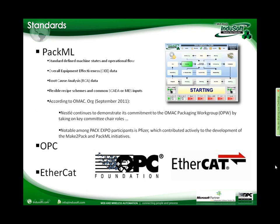According to OMAC, large companies like Nestle are adopting PackML standards, so we are seeing more customers requiring HMI support for this standard. OPC remains a strong standard in the industry, as does EtherCAT — a network for real-time control with extremely high performance using standard Ethernet cabling. In many machines where performance is required, EtherCAT is becoming a strong standard.